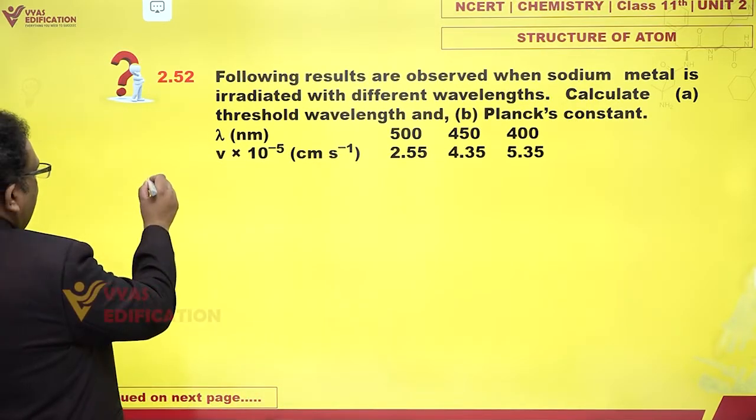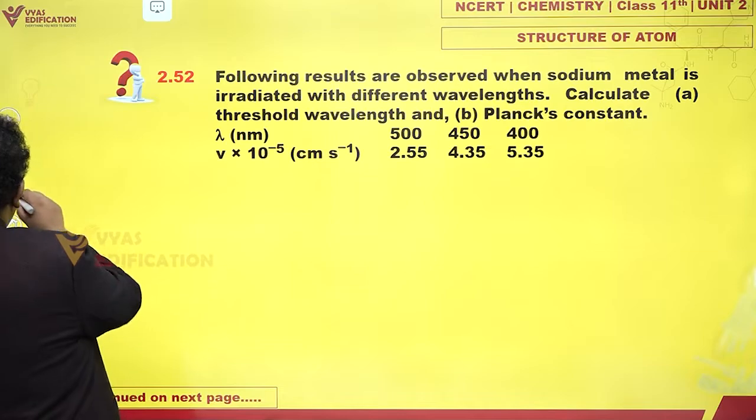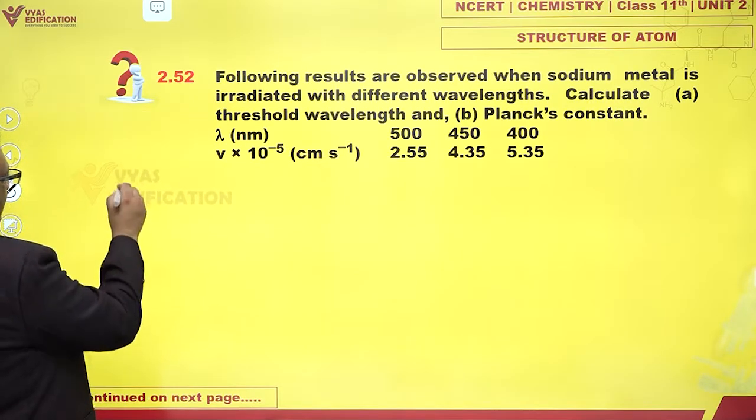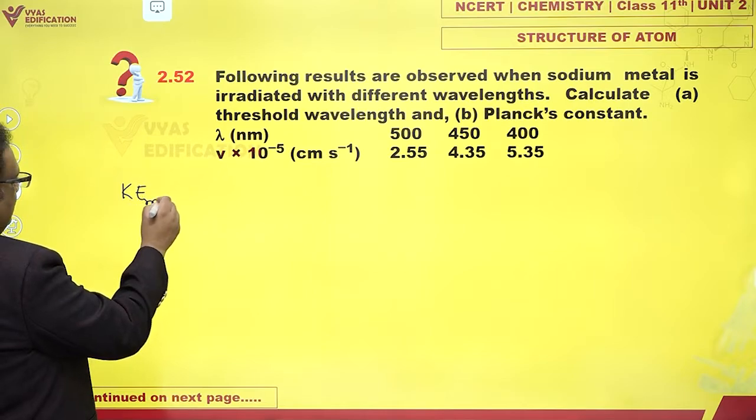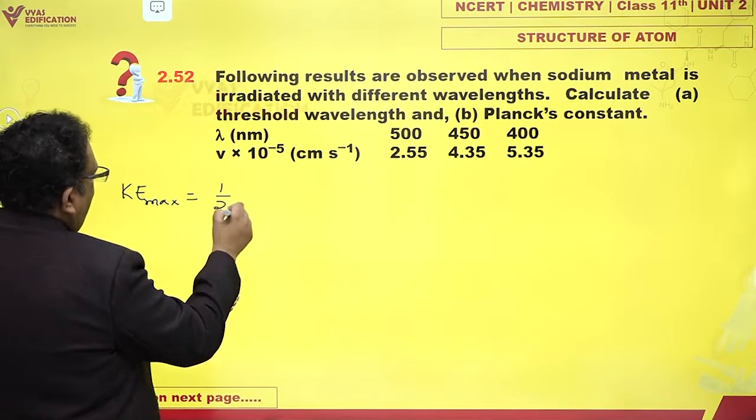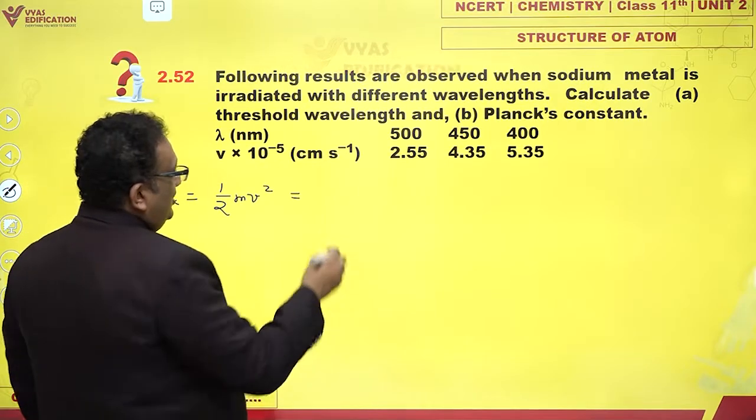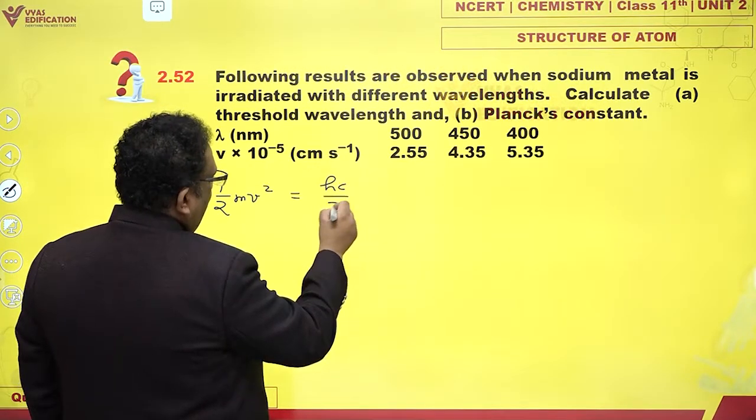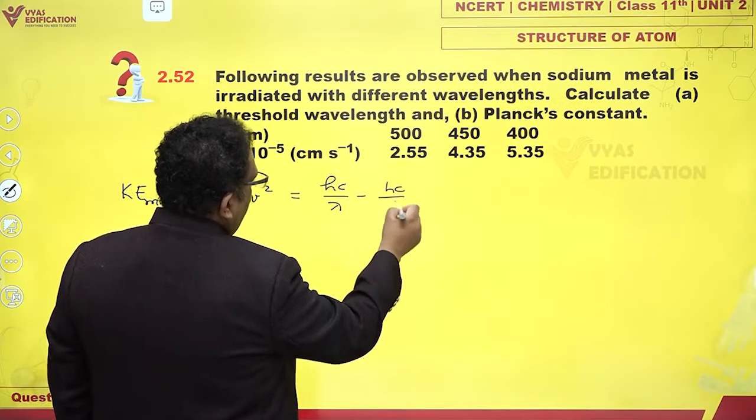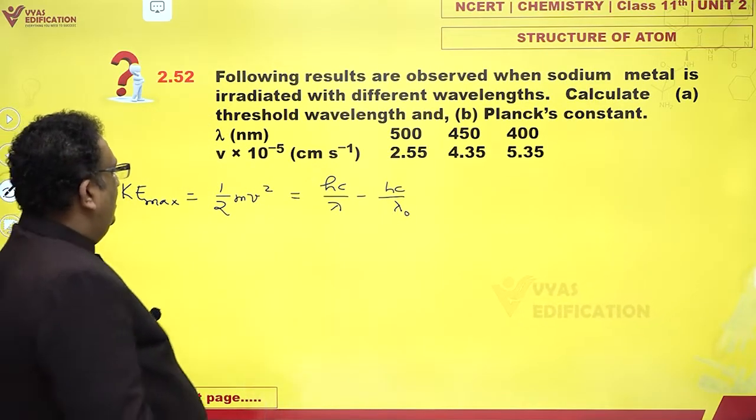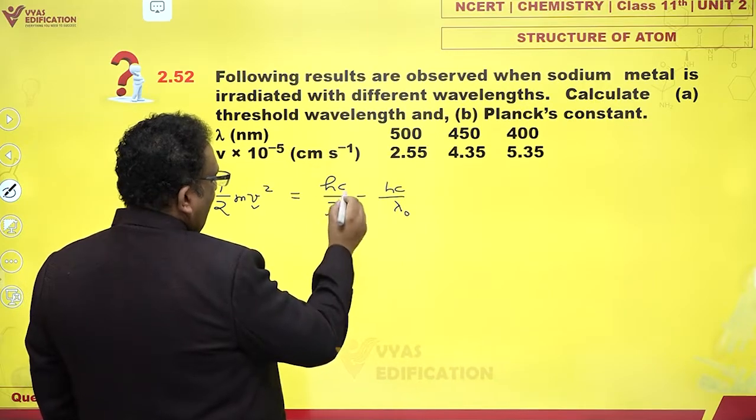Well, how do we do this? KE_max, which is half MV², equals HC by lambda minus HC by lambda naught. What do I know? I am given velocity V, I am given lambda.